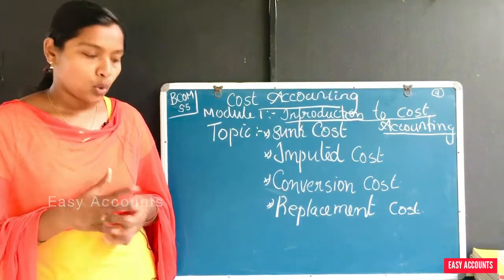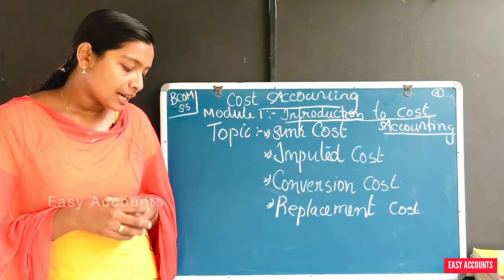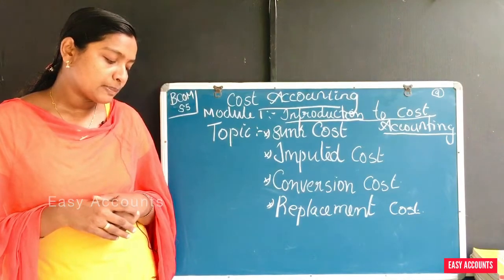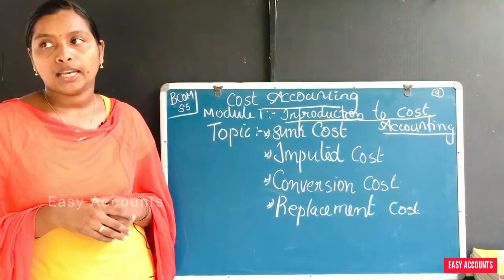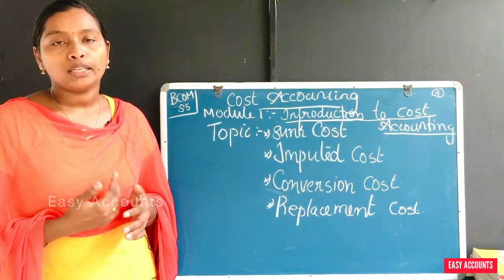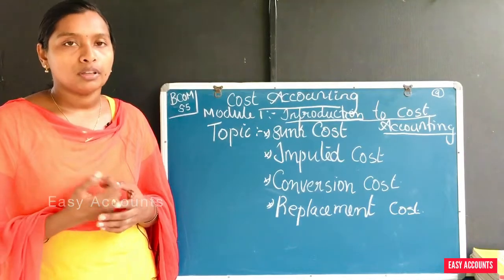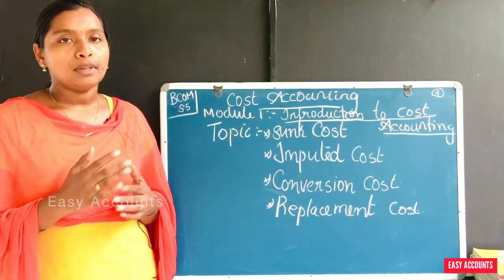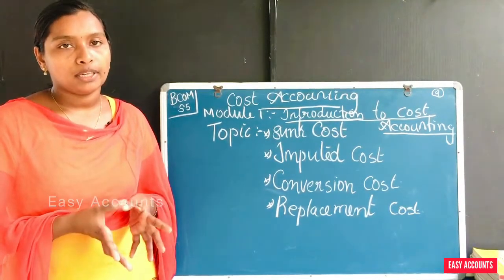For example, notional rent is charged to a business when the premises are owned by the proprietor. Even though the owner does not pay rent to anyone, a notional rent is imputed as a cost.